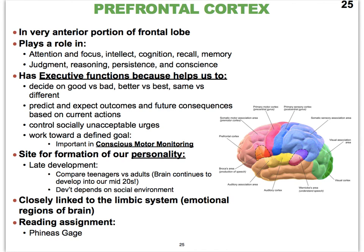The prefrontal cortex is also very closely linked to our limbic system, which we'll discuss towards the end of our brain discussion. There are two functional brain systems; one is called the limbic system, nicknamed our emotional brain. Because the prefrontal cortex is linked to this emotional brain, and if the prefrontal cortex hasn't finished developing yet, that explains why we tend to fall back on emotional decisions when we're younger.